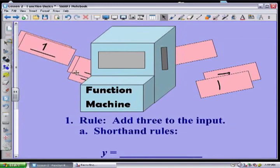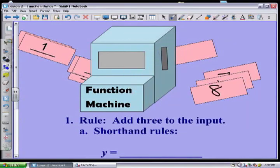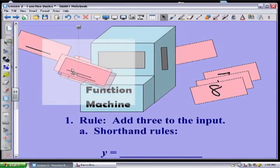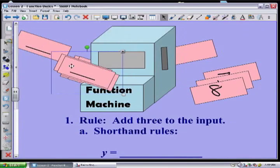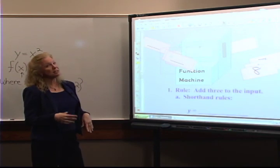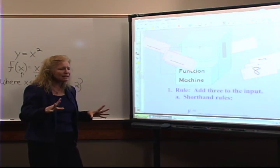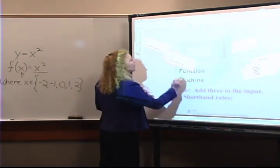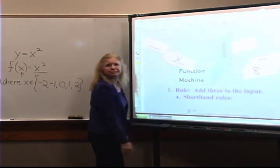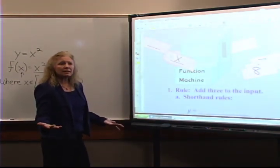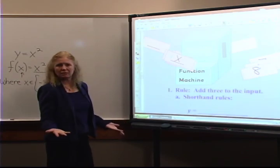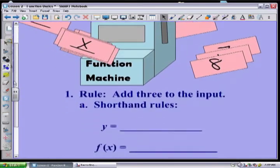Then we're going to put five in — five plus three, we get eight out. I can keep putting in numbers as much as I want, and eventually we get tired of putting in individual numbers. We say, why don't we just do this once and make a shorthand rule? What if I put in x? X is anything you want it to be.